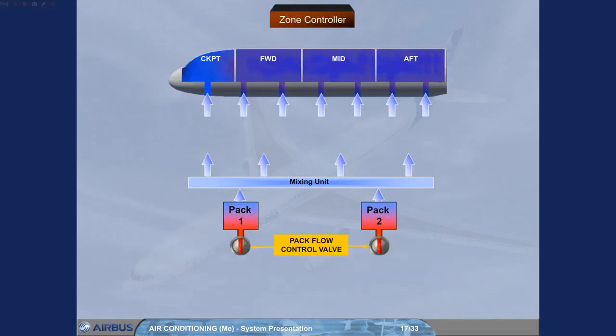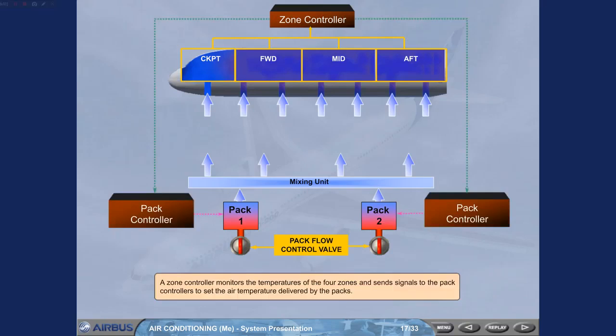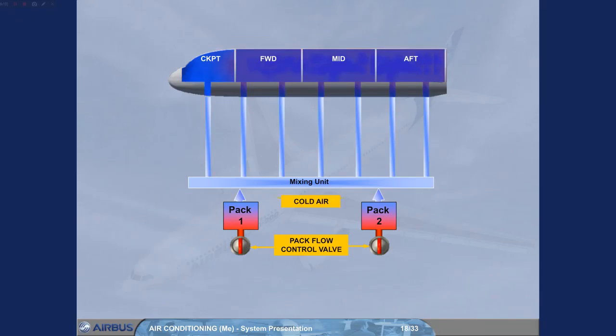A zone controller monitors the temperature of the four zones and sends signals to the pack controllers to set the air temperature delivered by the packs. Normally, cold air is delivered by the packs and is then sent to the four zones.